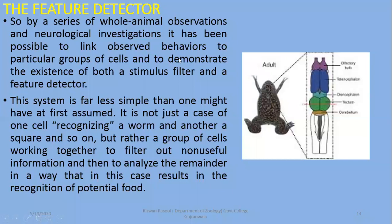So by a series of whole-animal observations and neurological investigations, it has been possible to link observed behaviors to particular groups of cells and to demonstrate the existence of both a stimulus filter and a feature detector. The stimulus filter areas were the ganglionic cells; TP3 or T5 cells serve as the feature detector, while the retina's rods and cone cells form the receptive field. This system is far less simple than one might first assume — it is not just one cell recognizing a worm. Multiple cells work together to filter out non-useful information and then analyze the remainder, resulting in the recognition of potential food.